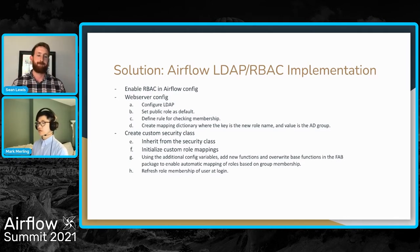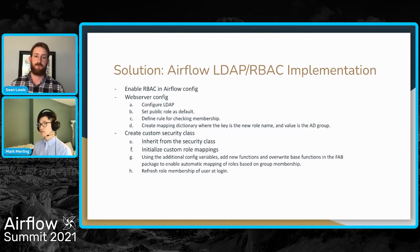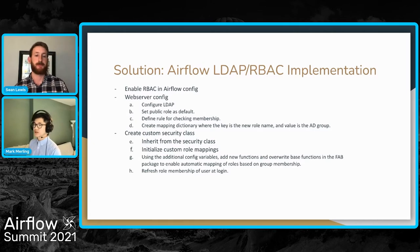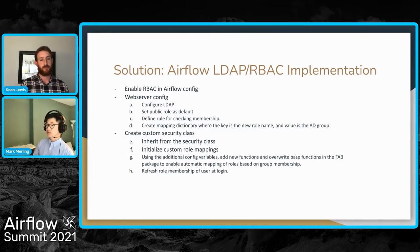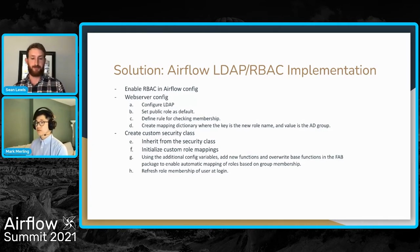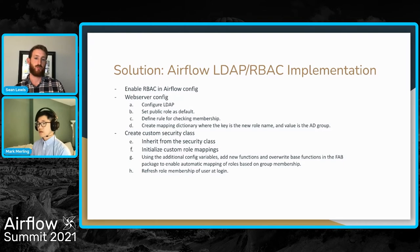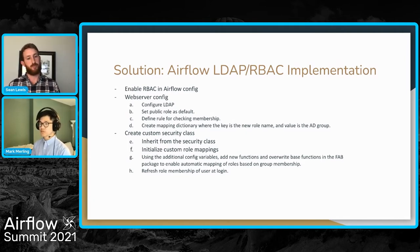When we set that default role, it's tied to organizational groups, so everybody within that group can log in, but because we're forcing them to be the public role, they see nothing — they can log in without getting an error. We created a custom security class that inherits from the Airflow security class, which technically also inherits from the Flask App Builder security class. Certain functions were either overwritten or newly created to handle our logic, including initializing the custom role mappings. There's also a somewhat hacky mechanism for refreshing role membership that we'll discuss more.